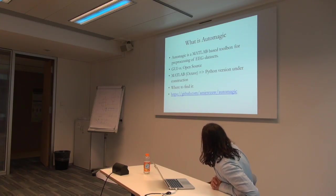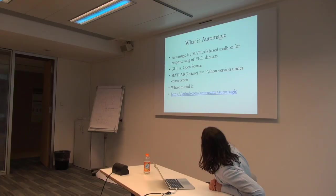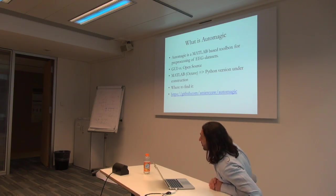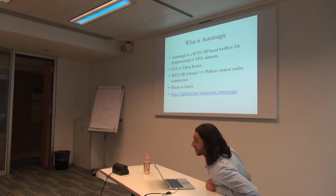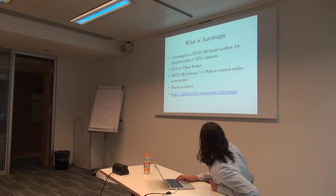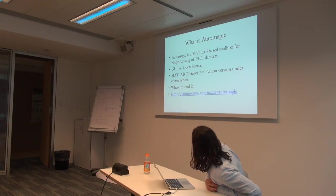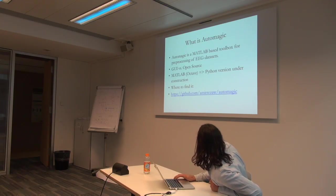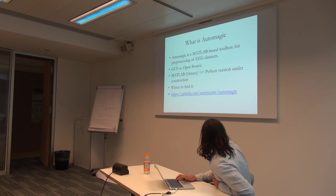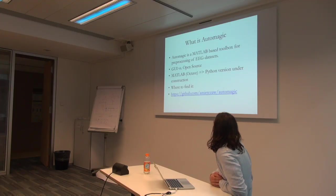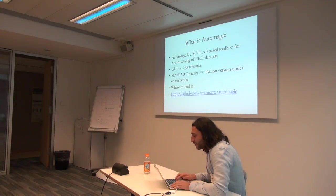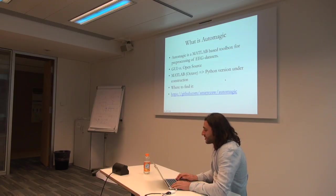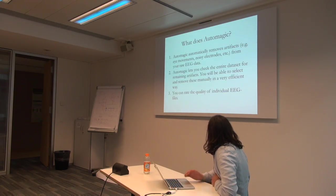Automagic is a MATLAB-based toolbox for pre-processing of EEG data. It has a GUI for those who don't like to code, but it's also open source so you can adjust the code. We're working with Johns Hopkins University and there will probably also be a Python version in a couple of years. You can find it via a GitHub link or download it from our university webpage.